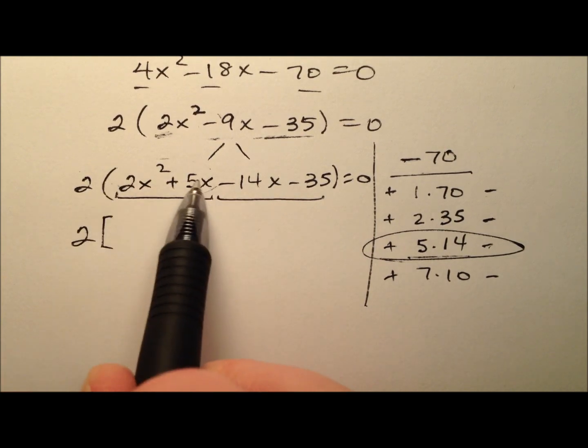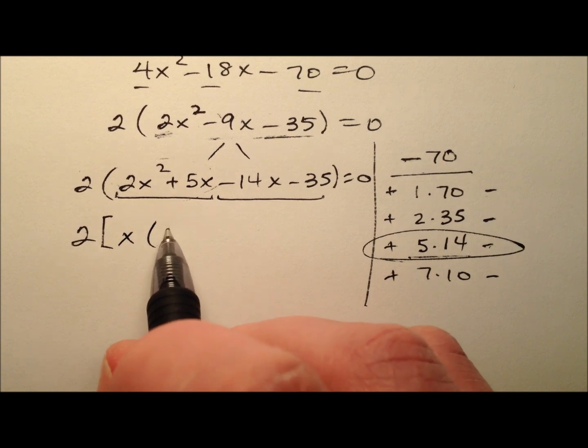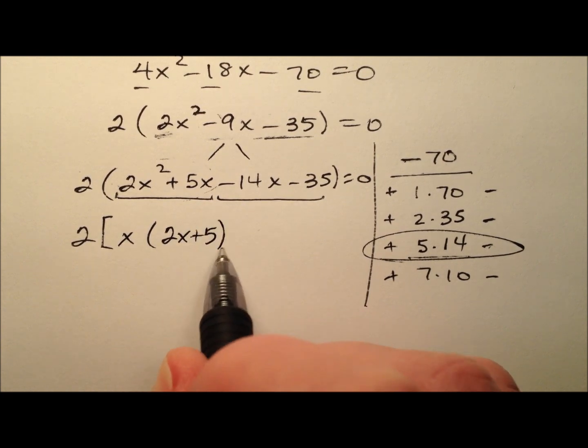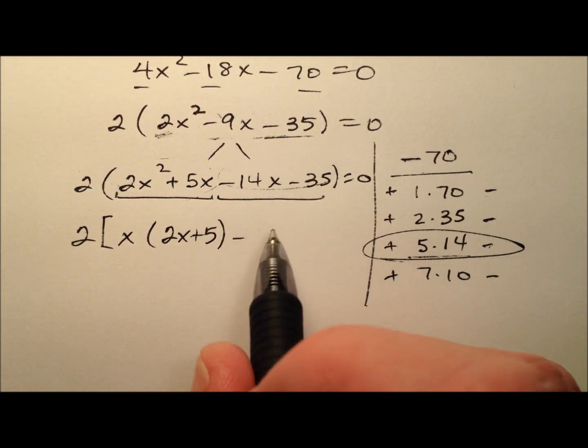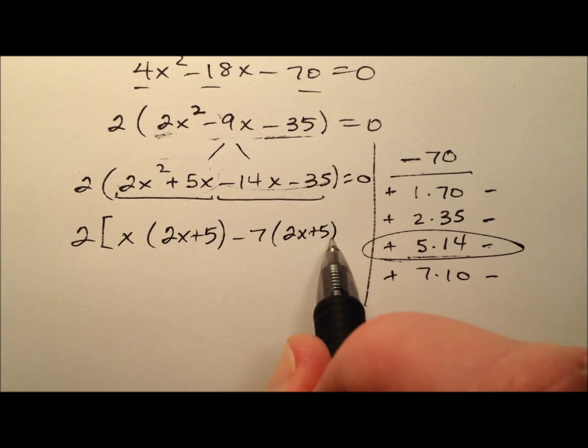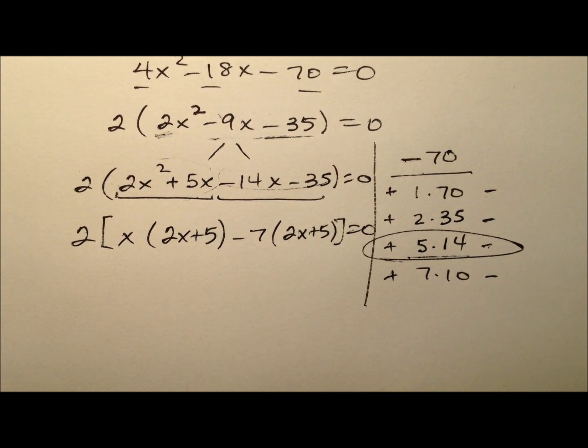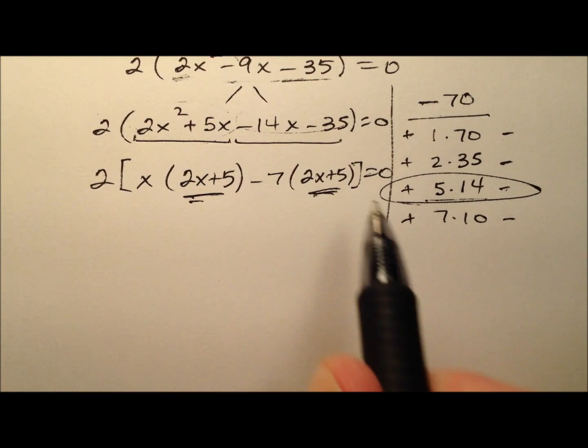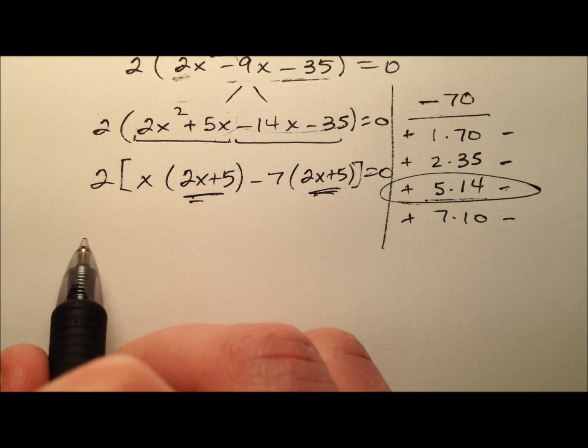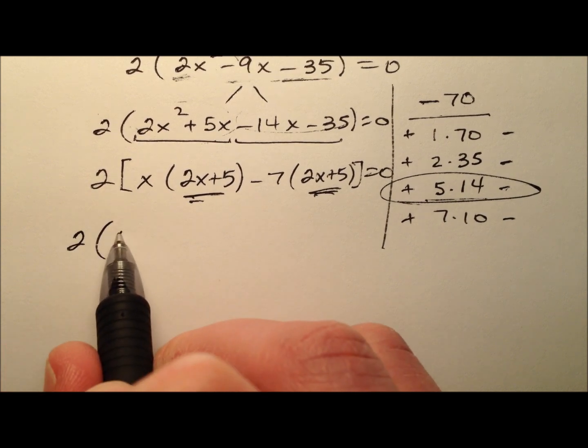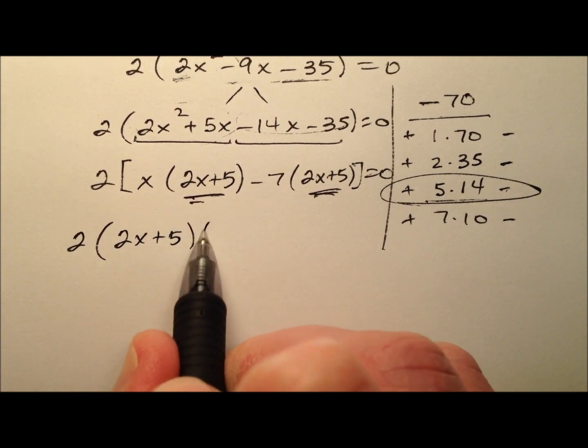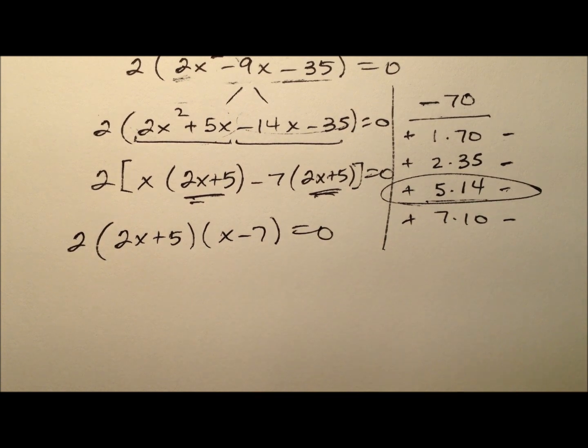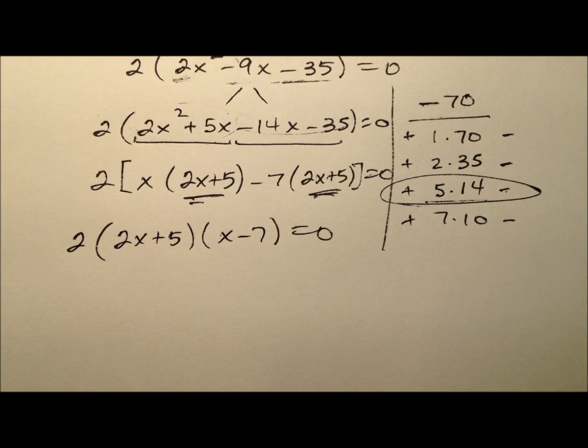We'll have the 2 out front, which is our greatest common factor. And then let's focus on the GCF here, which is going to be an x. So it looks like 2x plus 5. Here it looks like a negative 7. So 2x plus 5, close everything up, equal to 0. And then 2x plus 5 and 2x plus 5. Yeah, those guys are the same. So here we go. So one of the factors will be 2x plus 5 and the other factor will be x minus 7.